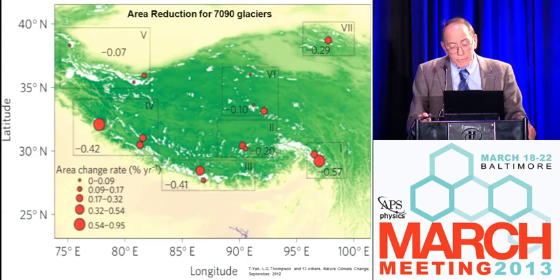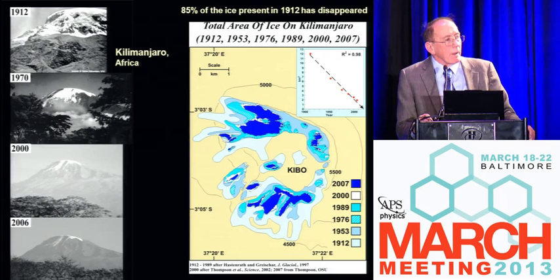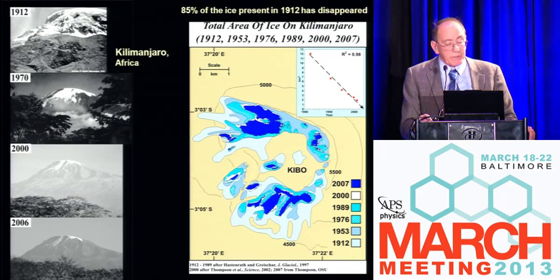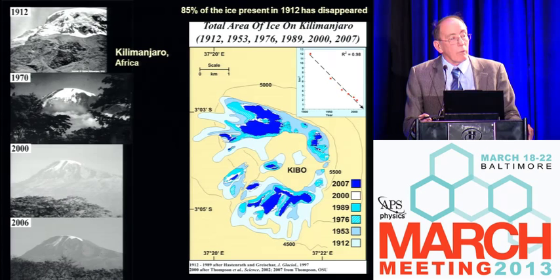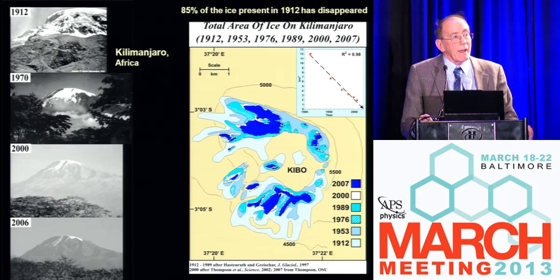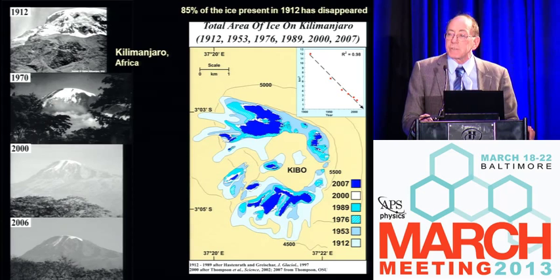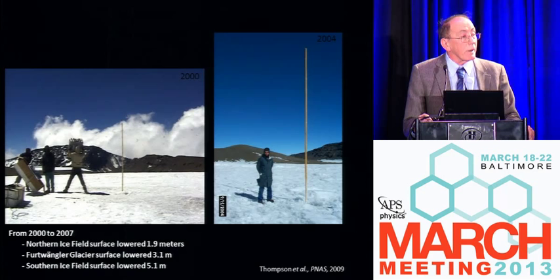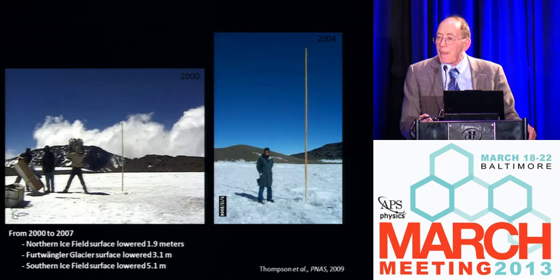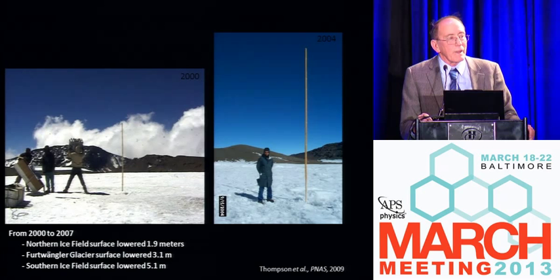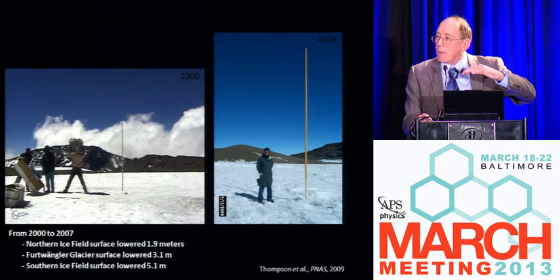If you go to Africa, to Kilimanjaro — the oldest photo shown is from 1912, and you can see what it looked like in 2006. The first map was made in 1912, and we've continued to map the loss of ice in that part of the world. We've lost about 85% of the ice on the mountain since 1912, and 26% since the year 2000 when we drilled there — so the loss of ice is accelerating. We put ablation stakes on these glaciers, and you can see the stake put out in 2000 and the same stake in 2004. These glaciers are no longer accumulating — they're wasting from the top down.